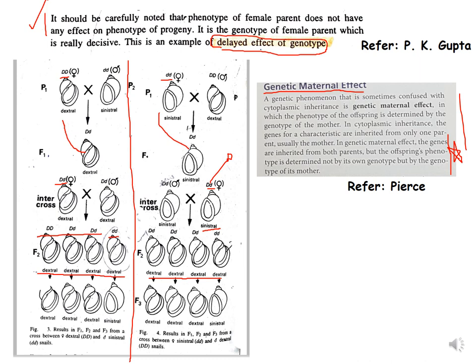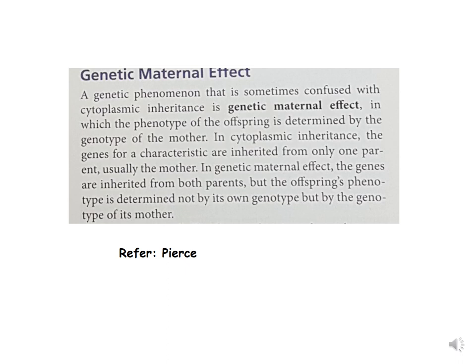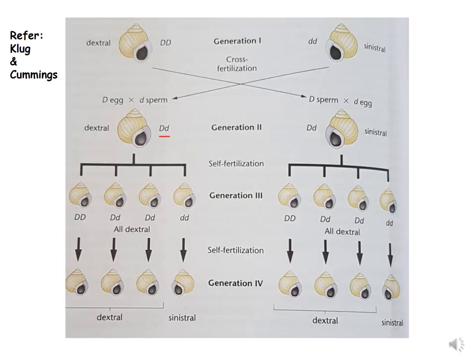Although genes are inherited from both mother and father, the offspring's phenotype is determined not by its own genotype but by the genotype of the mother. So in F2 and F3, although the progeny has both alleles — capital D and small d — they resemble the mother because the mother is dextral due to her heterozygous genotype (D/d), and dextral is dominant over sinistral. Refer to both PK Gupta and Pierce for this example. This picture is from Klug and Cummings and shows the same phenomenon.